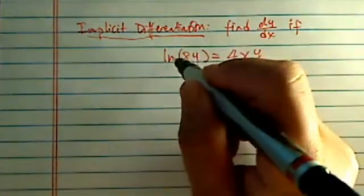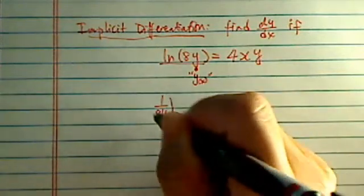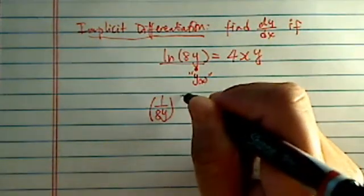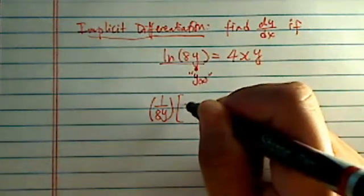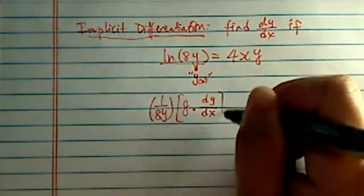So in our case here, in order to take derivative on this side, I have 1 over 8y, but we're not done yet. And I'm going to take derivative of 8y, which is really 8 times dy dx,